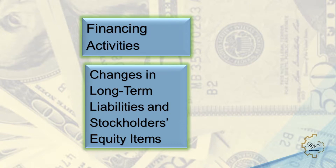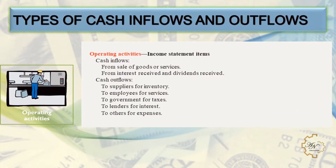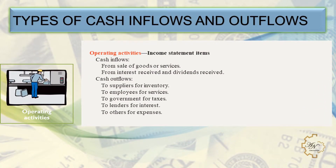Financing activities include obtaining cash from issuing debt and repaying amounts borrowed, as well as obtaining cash from stockholders, repurchasing shares, and paying dividends. Operating activities relate to income statement items. Cash inflows come from the sale of goods or services, interest received, and dividends received. Cash outflows go to suppliers for inventory, to employees for services, to the government for taxes, to lenders for interest, and to others for expenses.